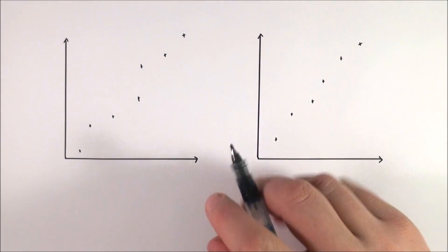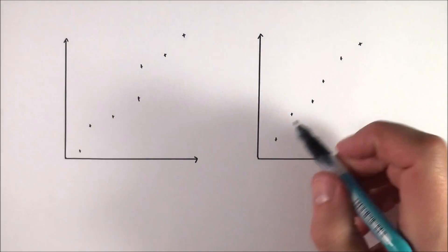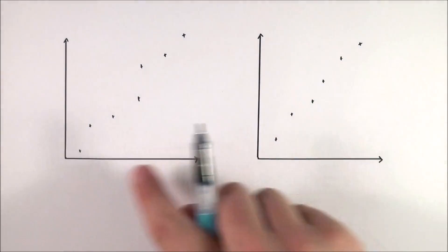Now I have here two sets of data from some kind of made-up experiment. First of all, which data looks better? I suspect you're probably going to say the data on the right.